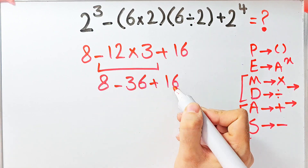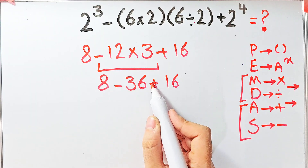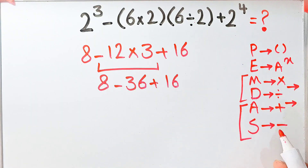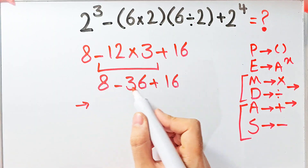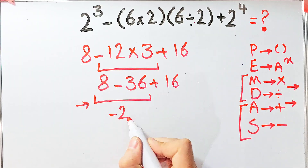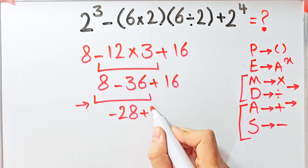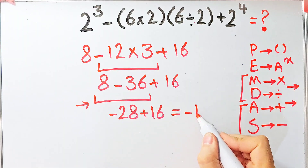In this step we have addition and subtraction, which have the same level of priority, so we start from the left. Eight minus thirty-six equals negative twenty-eight. Now we have negative twenty-eight plus sixteen, which equals negative twelve.